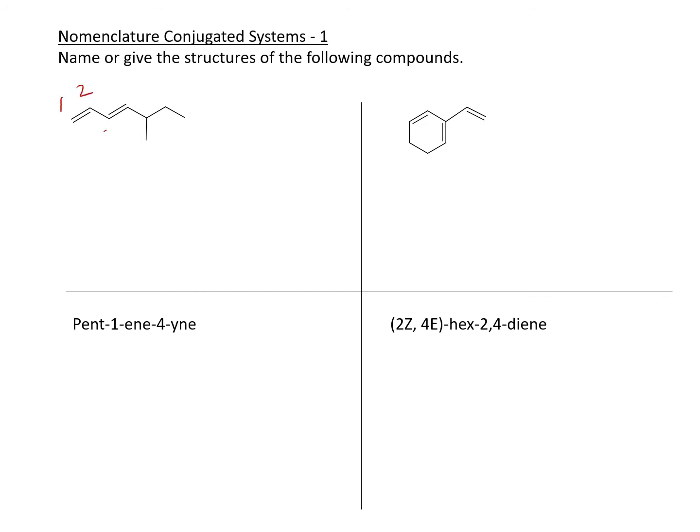One, two, three, four, five, six, seven. So it's a hept-something. On the fifth carbon, we have a methyl group and we are numbering from one because that's where the double bond is.